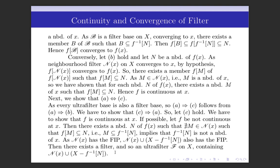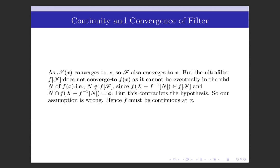Since this collection has the finite intersection property, there exists a filter containing it, and since every filter is contained in some ultrafilter, there exists an ultrafilter F on X containing this collection. Since N(x) converges to x and F contains N(x) — that is, F is finer than N(x) — and since any filter finer than a filter converging to x also converges to x, F also converges to x.